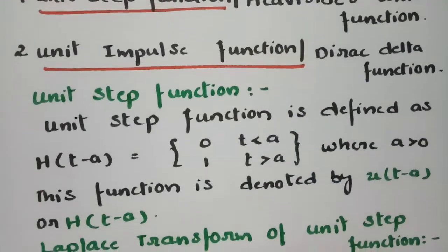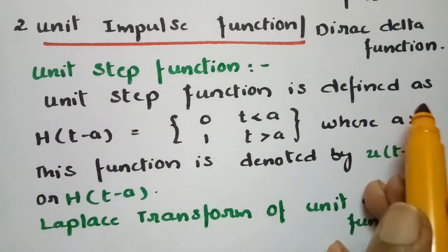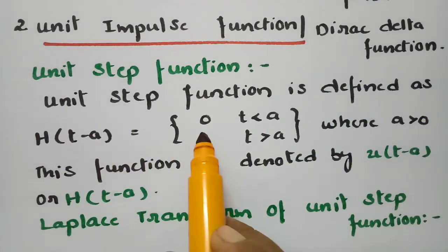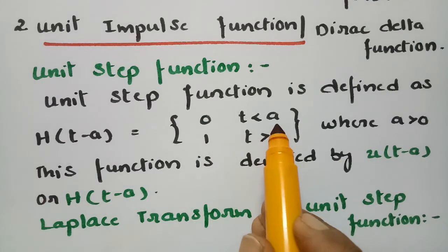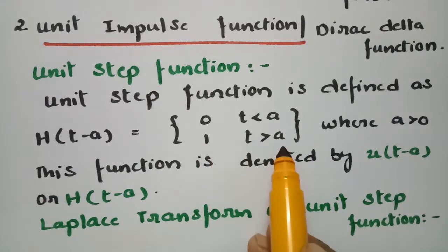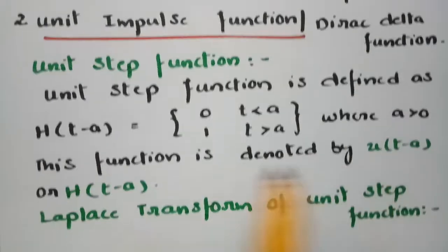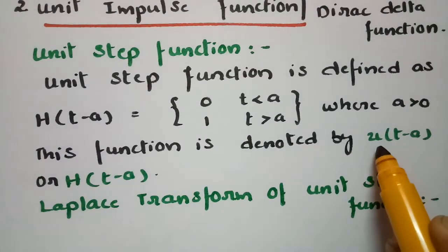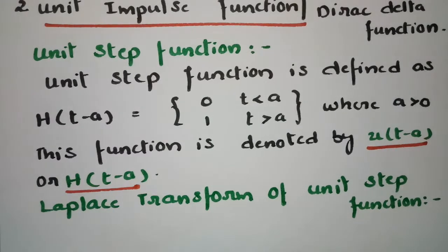According to the unit step function, it is defined as H(T - A) = 0 when T is less than A, and 1 if T is greater than A, where A is a positive value. This function is denoted by U(T - A) or H(T - A).